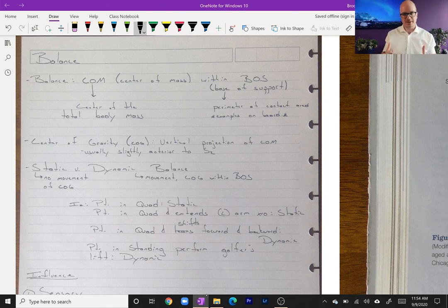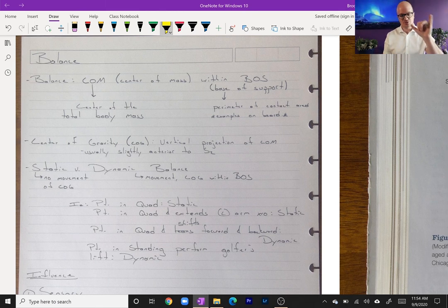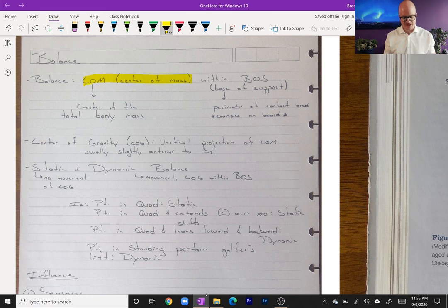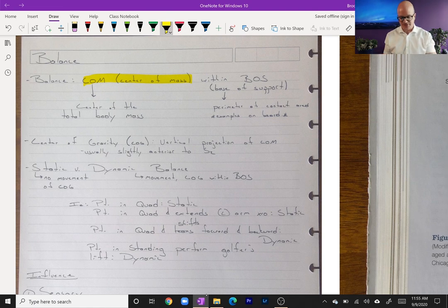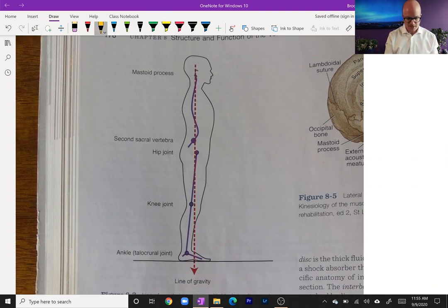So let's get right into this. Balance—two things we need to understand about the definition of balance. We have two parameters to think about. One is the center of mass, and this is the center of the mass of the body, so the point at which all parts from there are equal mass-wise.